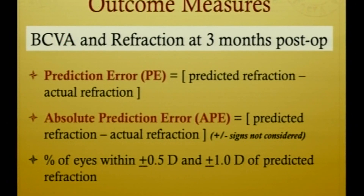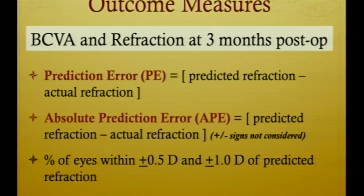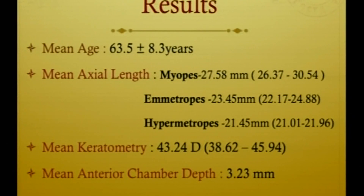Outcome measures included best corrected visual acuity and refraction at three months postoperatively. The prediction error — predicted refraction minus actual refraction — was calculated. Absolute prediction error was calculated without taking signs into consideration. The percentage of eyes within plus/minus 0.5 diopters and 1 diopter of predicted refraction was also analyzed. Mean age was 63.5 years.